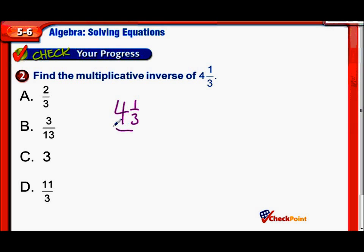You remember how to do that? We do 3 times 4, that's 12, and then we add 1. So 3 times 4 is 12 plus 1 is 13. So the numerator would be 13. And what's the denominator? The same as it was, so 13/3.